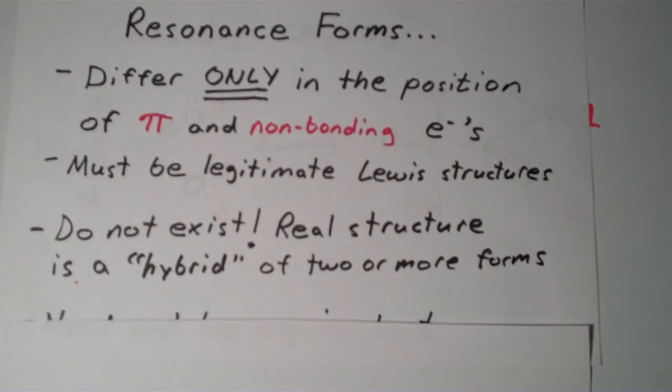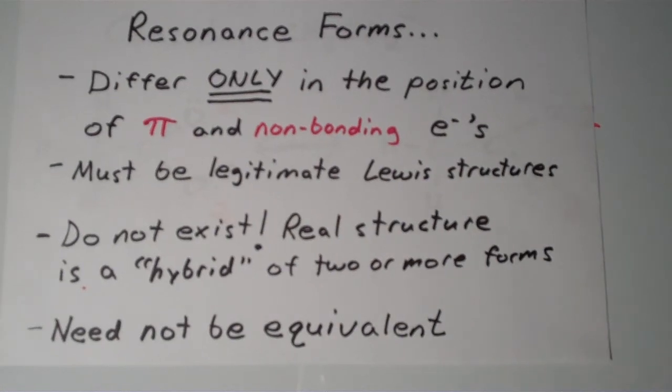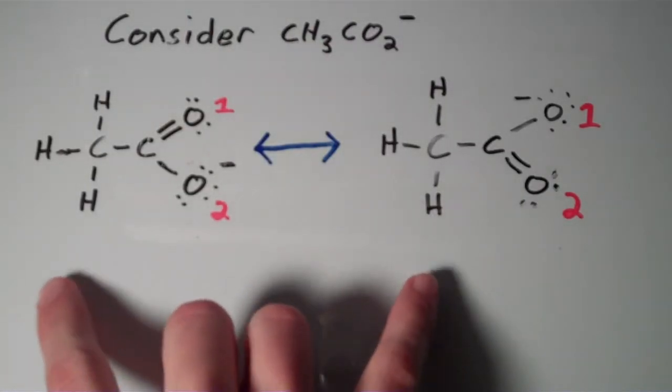The last tip about resonance forms is that they need not be equivalent. They often are equivalent, but they don't necessarily have to be. So if we go back to the case of acetate ion, these two resonance forms are equivalent.